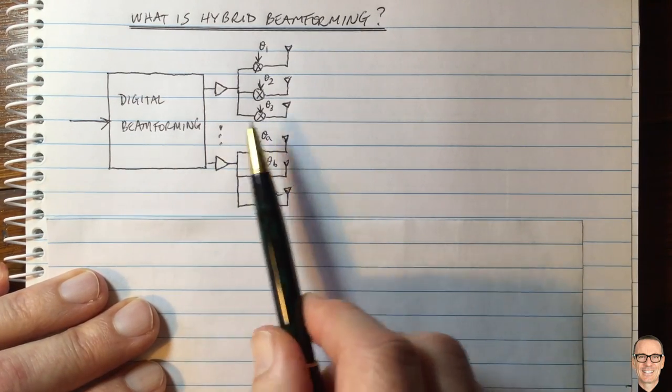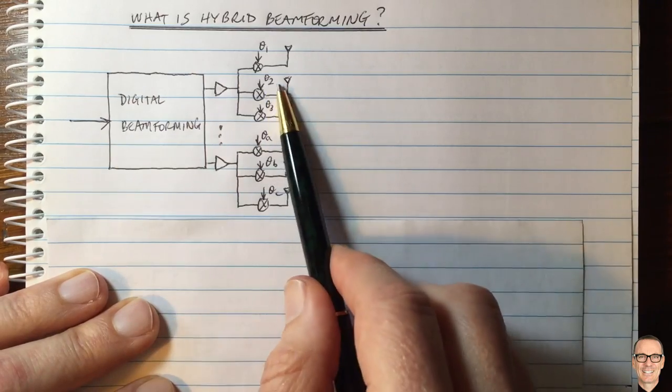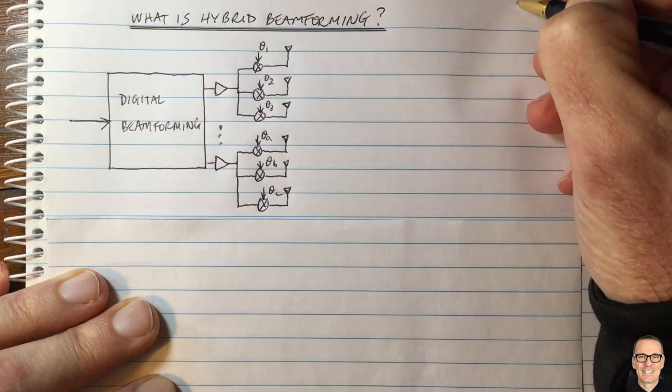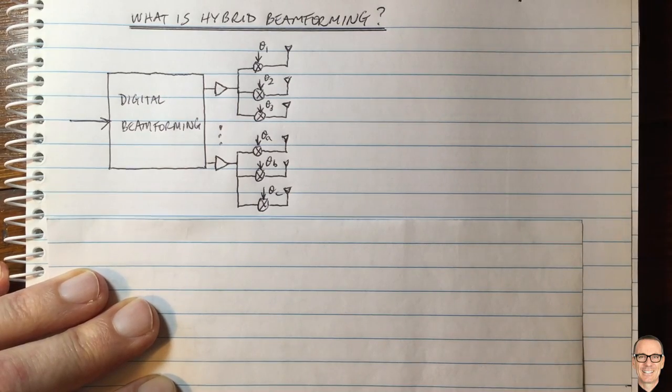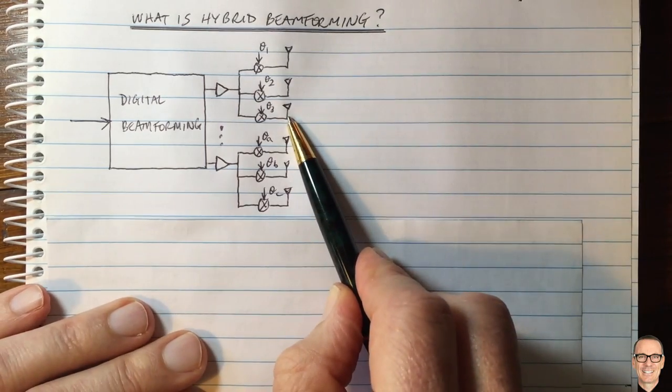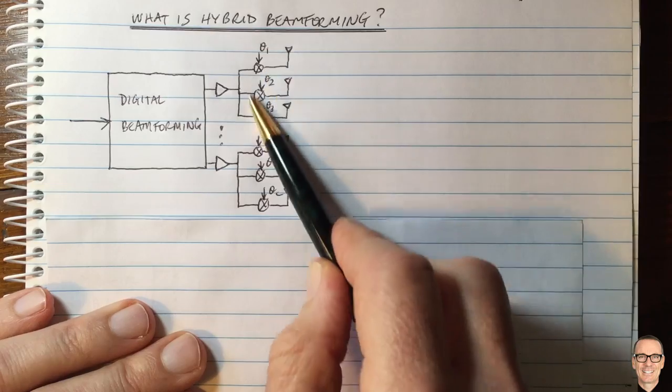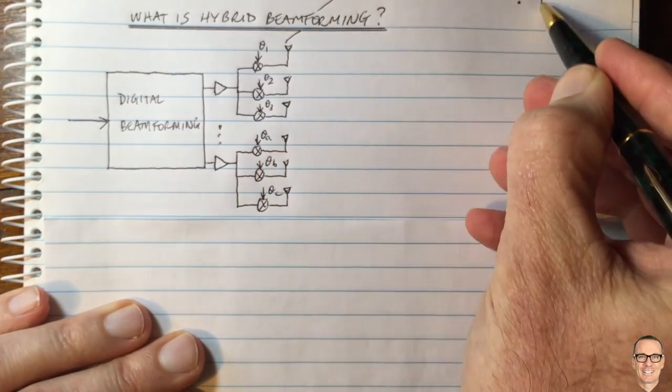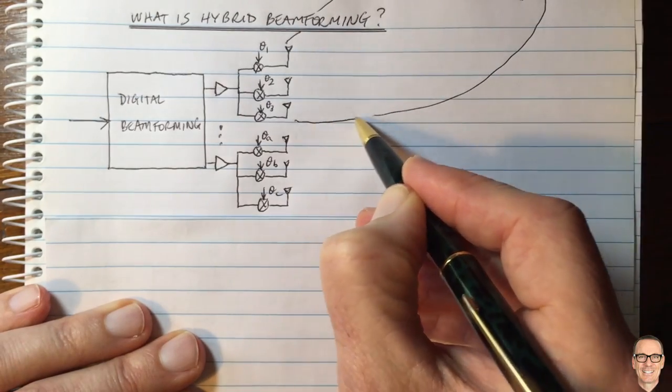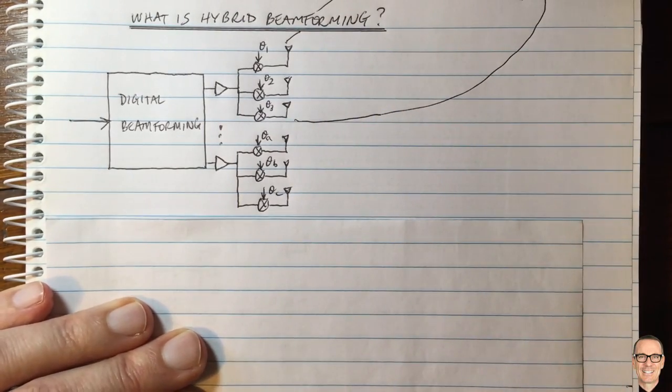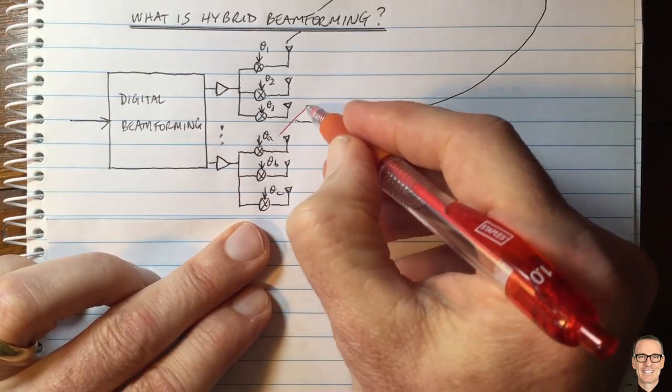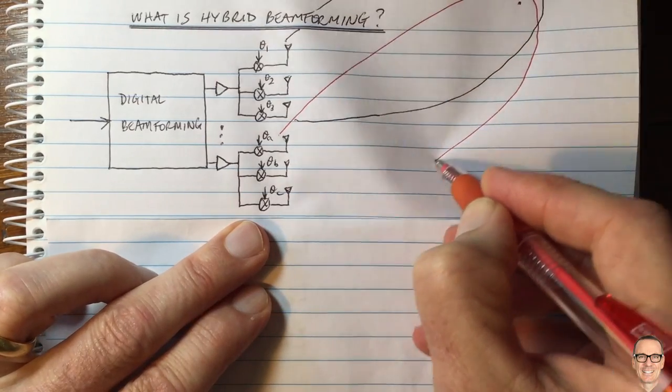For example we could have a beam being formed by this. Let's say the user was over here that we're trying to send the signal to, then we could have an analog beam being formed by these antennas here that's in the direction of that user, and then we could have another being formed by these antennas that are also in the direction of that user.